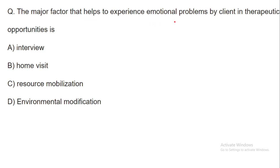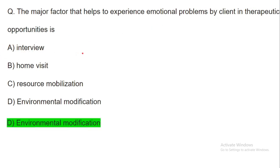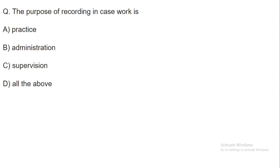Next question: What is the major factor that helps a client experience emotional problems in therapeutic opportunities? The answer is environmental modification. Environmental modification factors help to address and experience emotional problems, and it can be used by the client for therapeutic treatment.